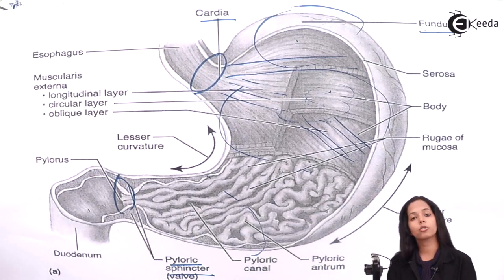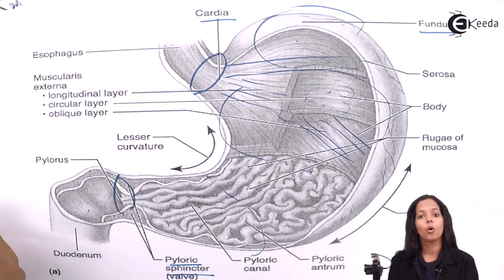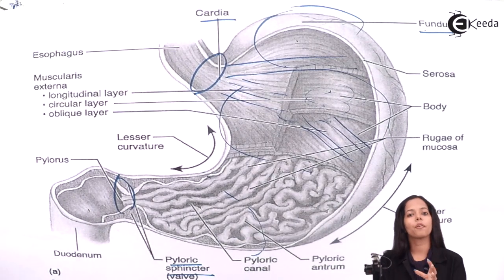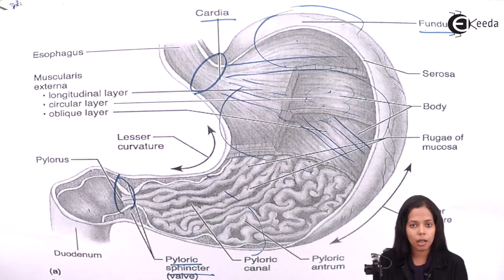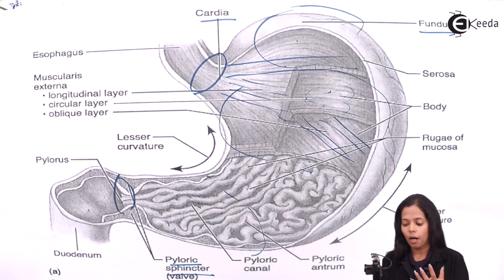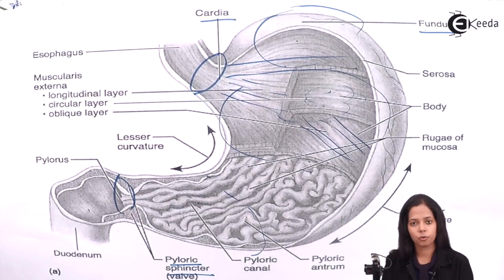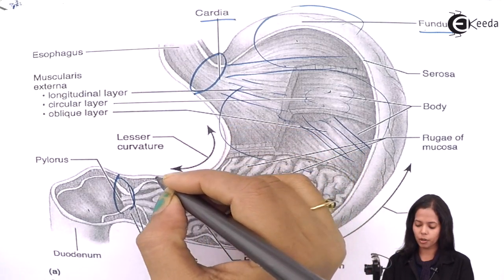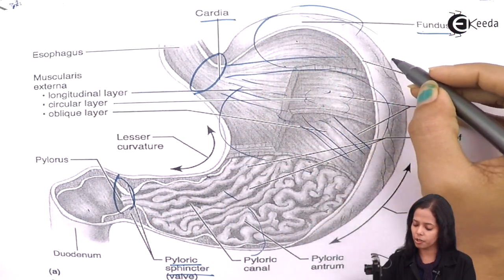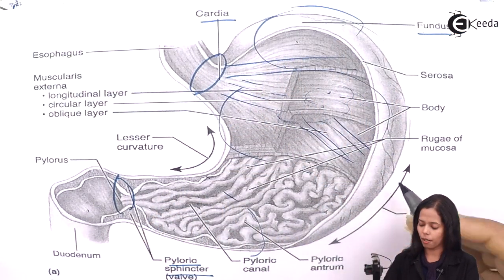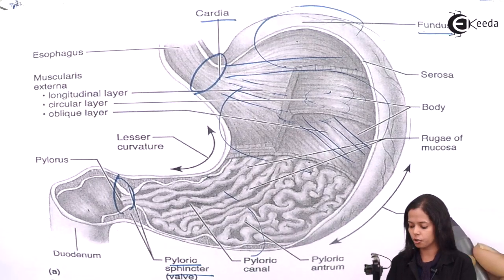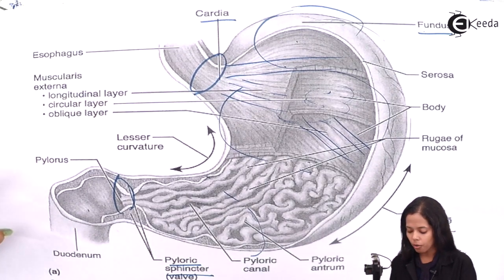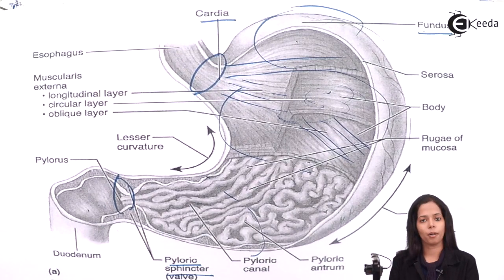The stomach also shows two curvatures. The two curvatures are the lesser curvature and the greater curvature. You can see both of these in the diagram. This is all about the structure of the stomach.